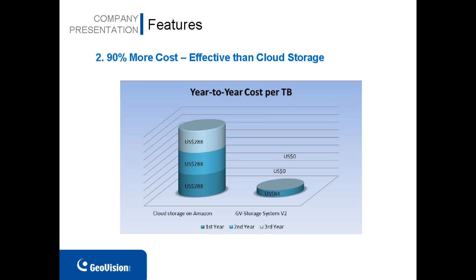Feature number two: it is more cost-effective than cloud storage. GV Storage System v2 features a lasting network storage solution for a one-time investment. It has significantly lower cost per terabyte over a three-year period, with a ratio of 10 to 1. Unlike with cloud storage, if you want to store a lot of information, you will probably have to pay for the service fee year-by-year, and also it requires an internet connection to access your data.